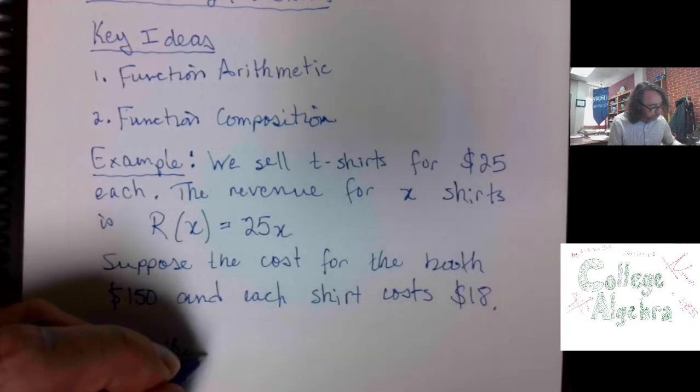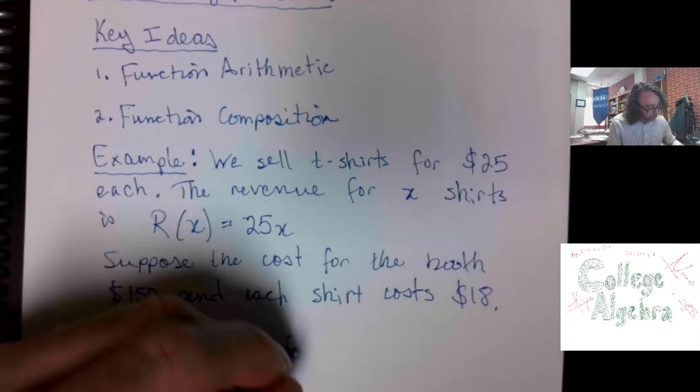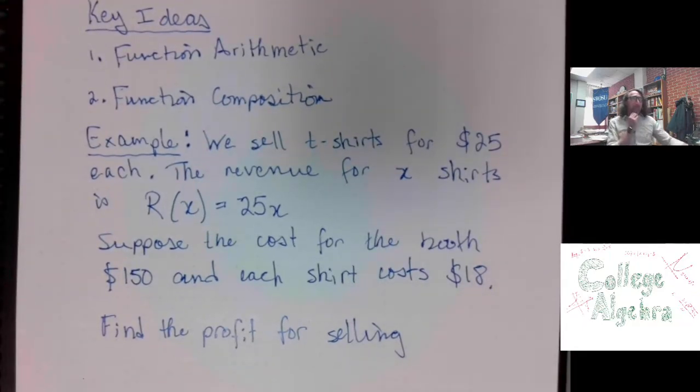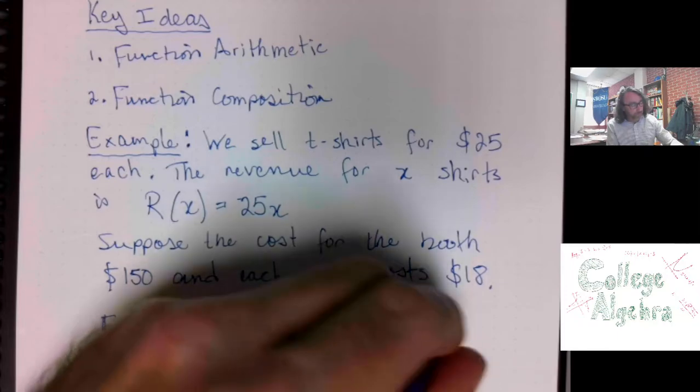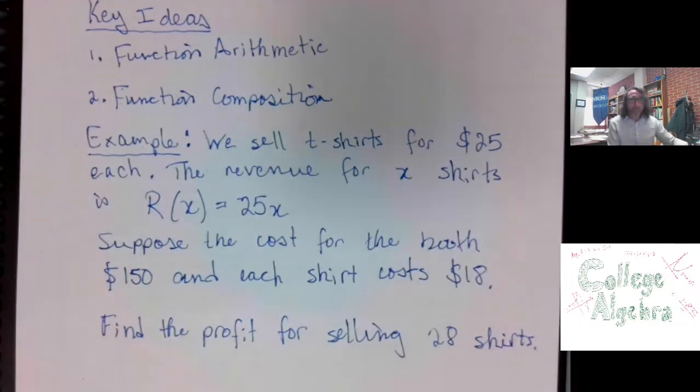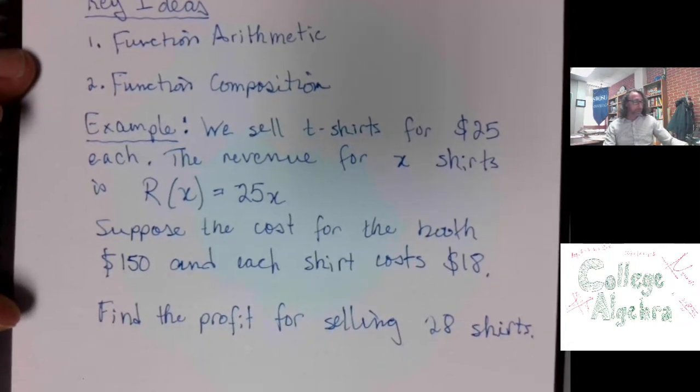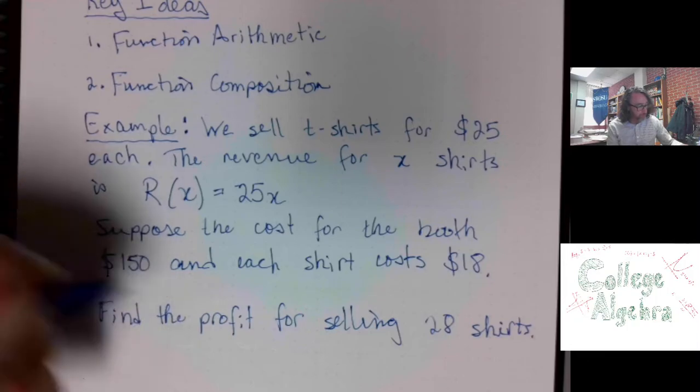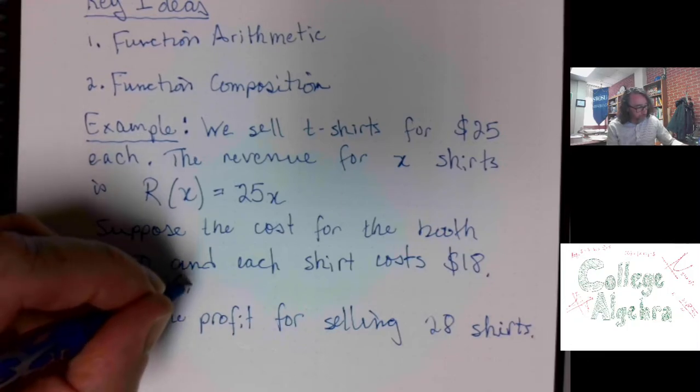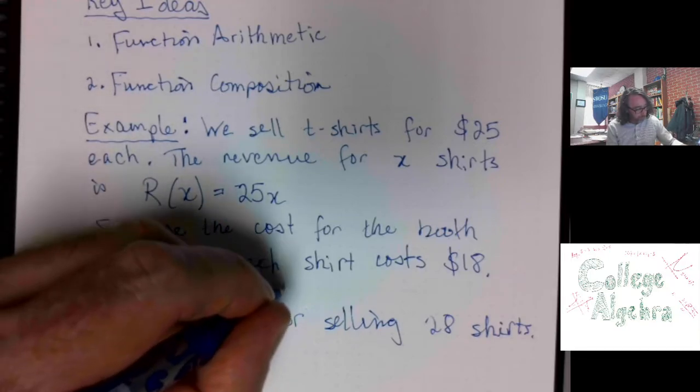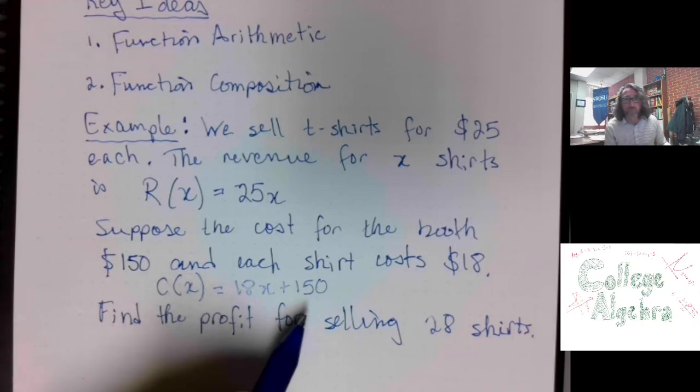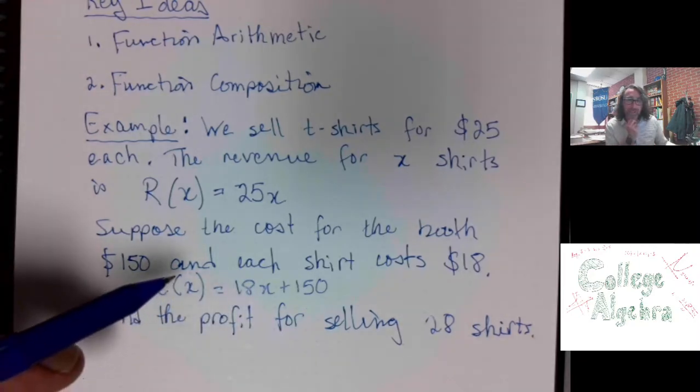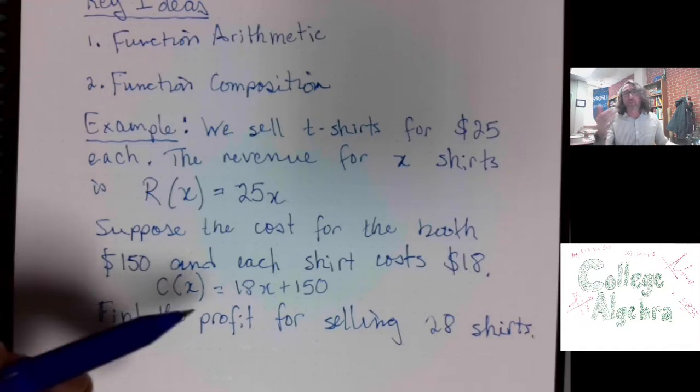Find the profit for selling 28 shirts. So, the cost for selling x shirts is given by another function, C of x equals 18x plus 150. 150 because that's the charge for setting up the booth, and then $18 per shirt. To find the cost for x t-shirts, I take whatever x is, I take my input value, multiply by 18, add 150.